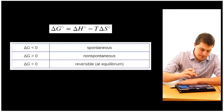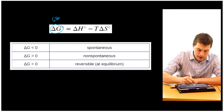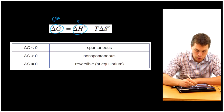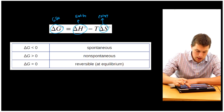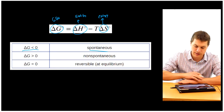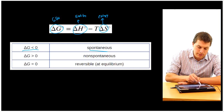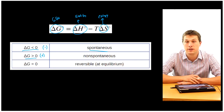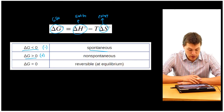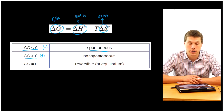Gibbs free energy is delta G. Delta H is our enthalpy — like our energy — and delta S is our entropy. When delta G is less than zero, that's a spontaneous process. If you get a negative Gibbs free energy, that's spontaneous. On the other hand, if your Gibbs free energy is greater than zero, that's a non-spontaneous process. And if delta G is exactly zero, that means you're at equilibrium — neither the forward nor the backward process is spontaneous.